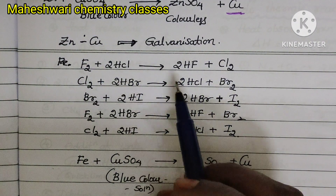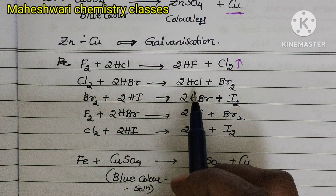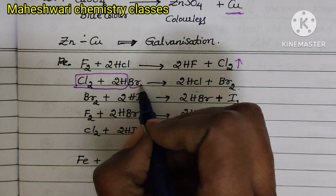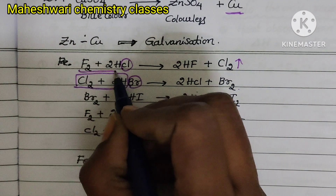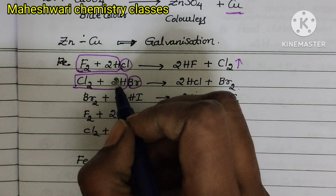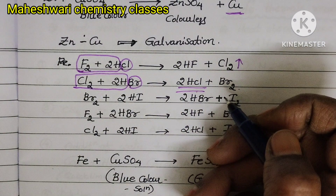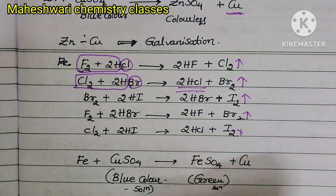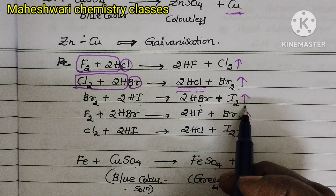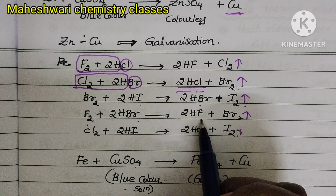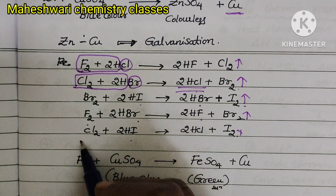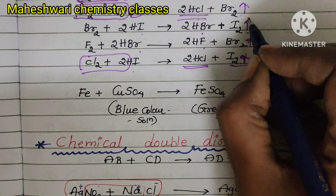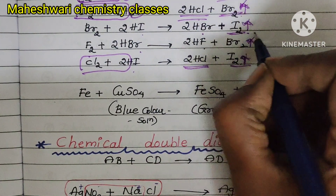Chlorine reacts with hydrogen bromide and gives hydrogen chloride and bromine gas. A halogen atom reacts with a hydrogen halide, displacing the other halogen atom and giving a new acid while the other halogen is eliminated as a gas. Bromine reacts with hydrogen iodide, giving hydrogen bromide and iodine gas. Fluorine reacts with hydrogen bromide, giving hydrogen fluoride and bromine gas. Chlorine reacts with hydrogen iodide, giving hydrochloric acid and releasing iodine gas.